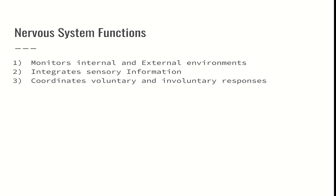In order to do this, we have to integrate, or analyze, sensory information — we have to collect it and analyze it, that's what integrate means. And then we coordinate voluntary and involuntary responses. Voluntary means with conscious mind, like you're choosing to do that action. Involuntary is something that your brain does without your conscious choice — you do not tell your heart to beat. Your brain has mechanisms in place to keep your heart beating without you dedicating conscious thought to it.